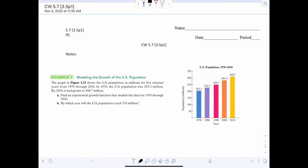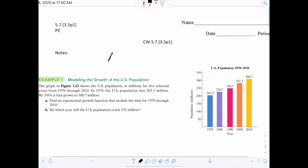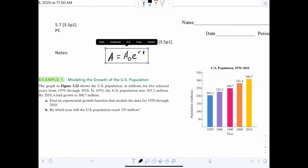Welcome to CW 5.7. Today we'll be doing word problems in our chapter. So first you're going to write this formula down: A equals A sub zero, or some people say A naught, times e to the rt. And you're going to want to 3D box this. This is going to be the most important formula we have for this particular unit.